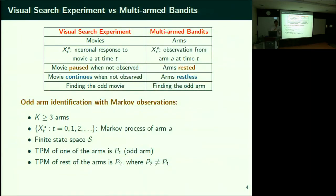Let's say for one of the arms the TPM is P1 — this is what I call the odd arm. For the rest of the arms it is some other P2, and P2 is not equal to P1.